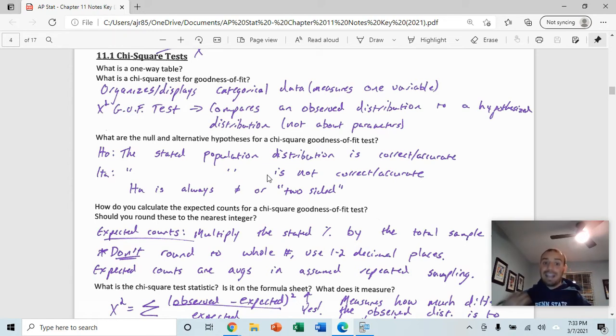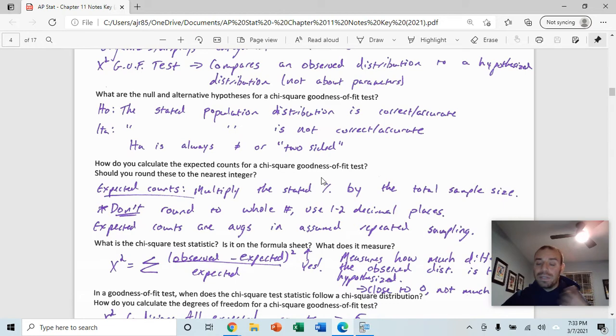For example, it might say something like in the M&M example, this is the percentage that should be blue, orange, red, green, brown, and so on. And our null hypothesis would be that that stated distribution or those stated percentages are correct. And the alternative would be that that is not correct or that is not accurate or at least one of those percentages is not correct. So we're thinking always in terms of the entire distribution when we're talking about a chi-squared test.